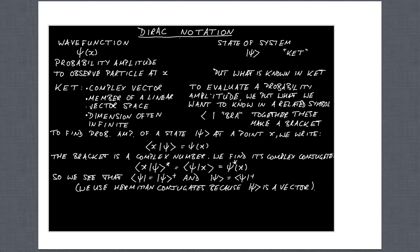The bracket is a complex number. It's a probability amplitude which you've already seen before. You can take its complex conjugate and you can write that as bra x ket psi with a star above it and that's equal to bra psi ket x, which is of course equal to psi star of x.